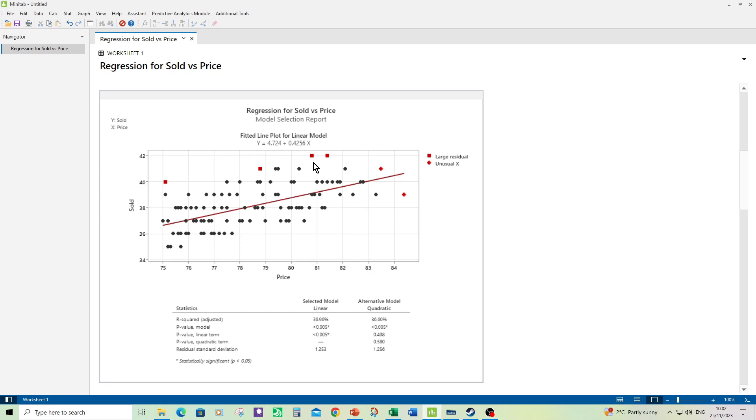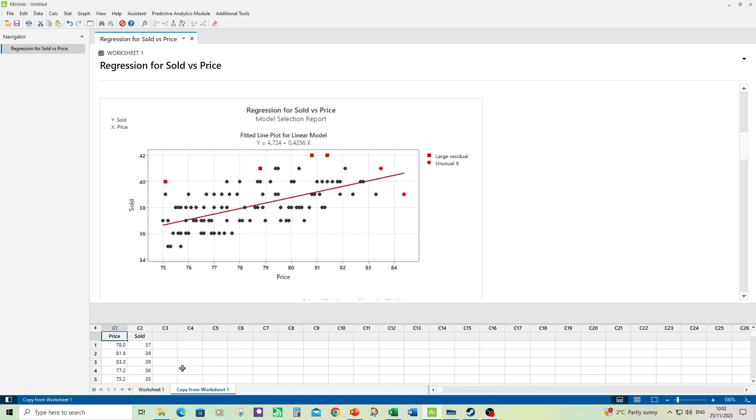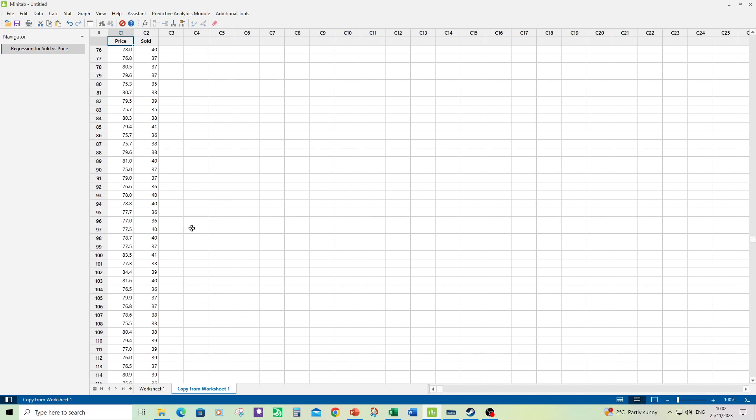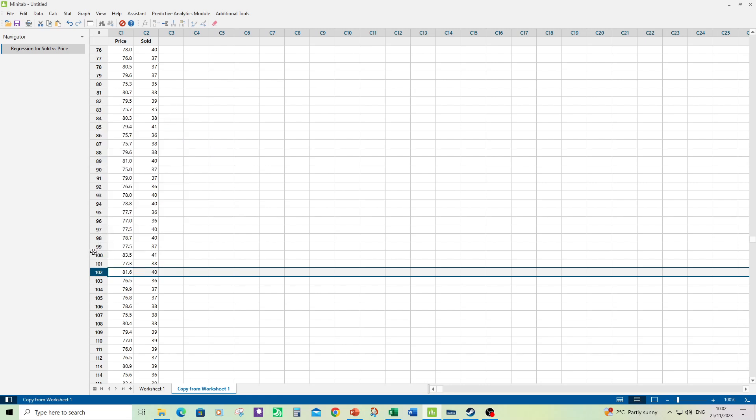But for the unusual residuals what we can do is note down which rows they're in. So that one's in row 102 and that one's in row 100. So what we can do is duplicate the worksheet and then we can take out rows 102 and 100. Let's start off with 102 because you've got to do it with the highest row number first. And then delete the row. And then do 100.